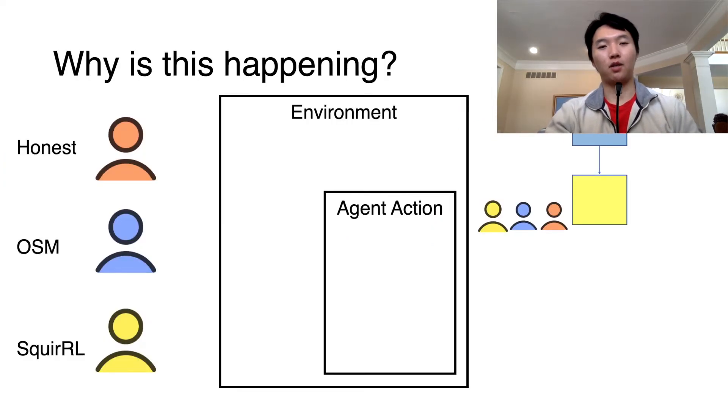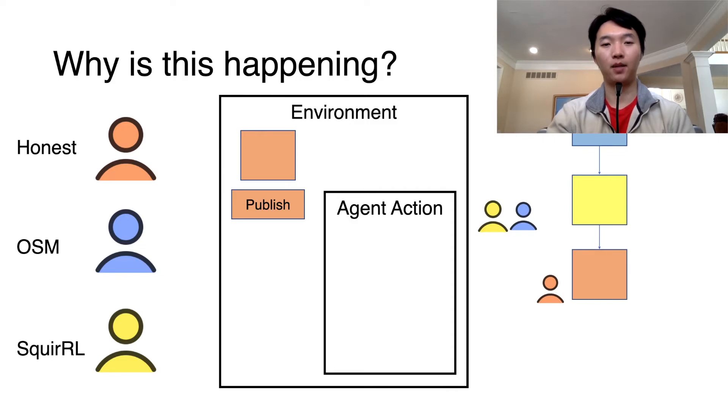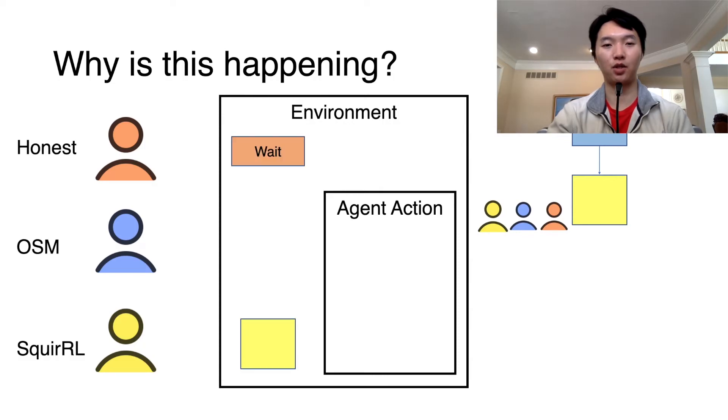In the low hash power setting, we know that the best strategy for strategic agents is honest mining. First, let's consider what happens when an honest party publishes a block. Because of the rushing adversary assumption, the OSM and Squirrel agent can adopt that block immediately, letting the honest miner get the reward for any block it publishes. Now, consider what happens if Squirrel gets a block and publishes. Because of the rushing adversary assumption, both OSM and Squirrel perform their actions late to give themselves time to react to the honest agent. So OSM doesn't see Squirrel publish the block before choosing an action. As a result, OSM waits and does not adopt Squirrel's block.